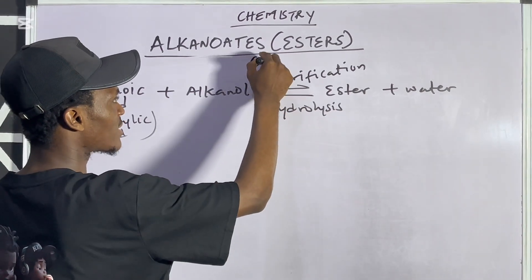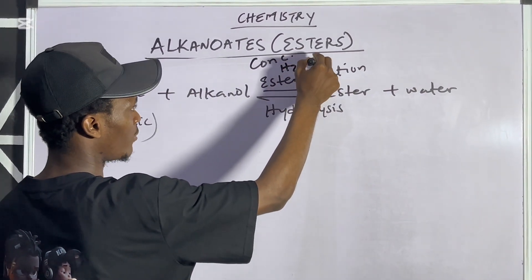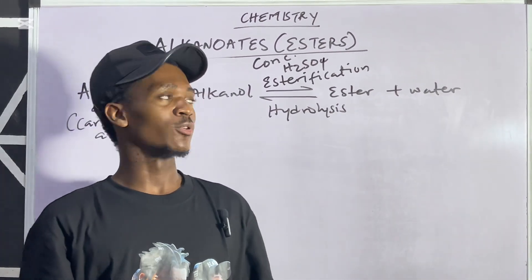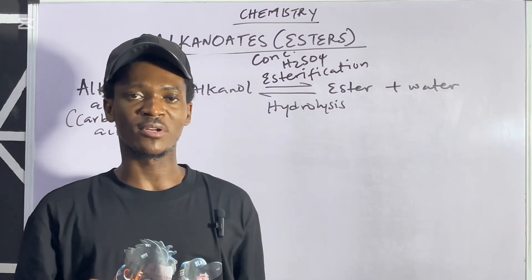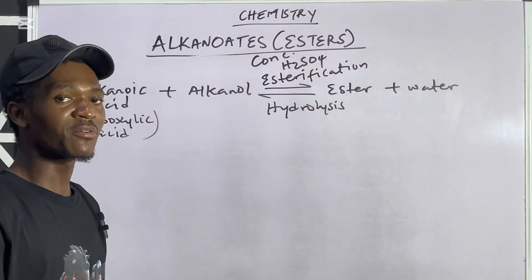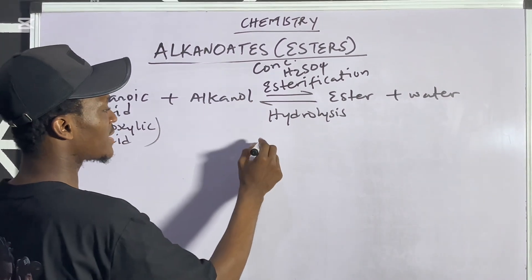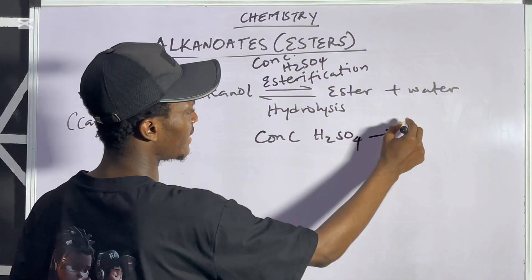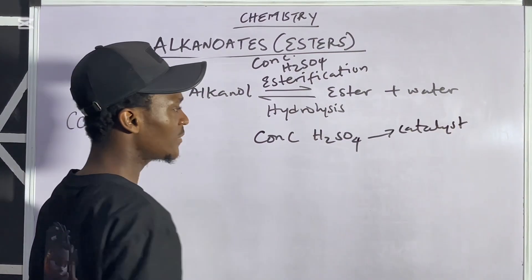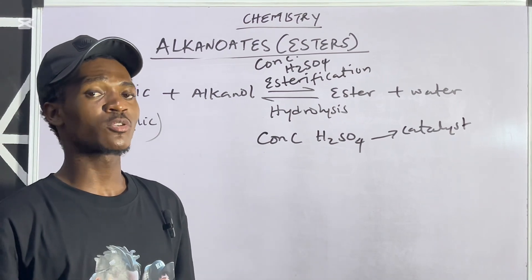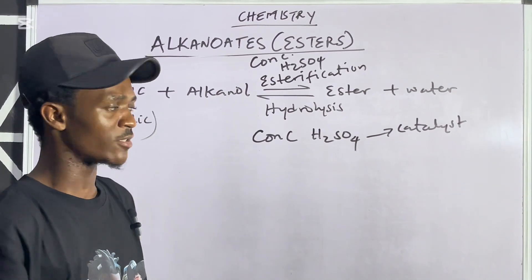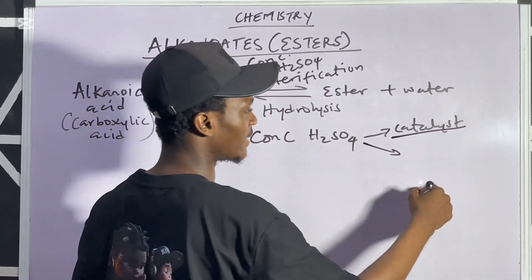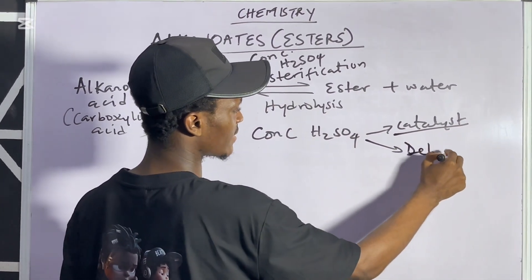This reaction proceeds with the application of concentrated H₂SO₄. Literally the reaction is slow, so adding concentrated sulfuric acid increases the reaction rate — meaning concentrated H₂SO₄ functions as a catalyst. It also functions as a dehydrating agent, so it functions as both a catalyst and a dehydrating agent.